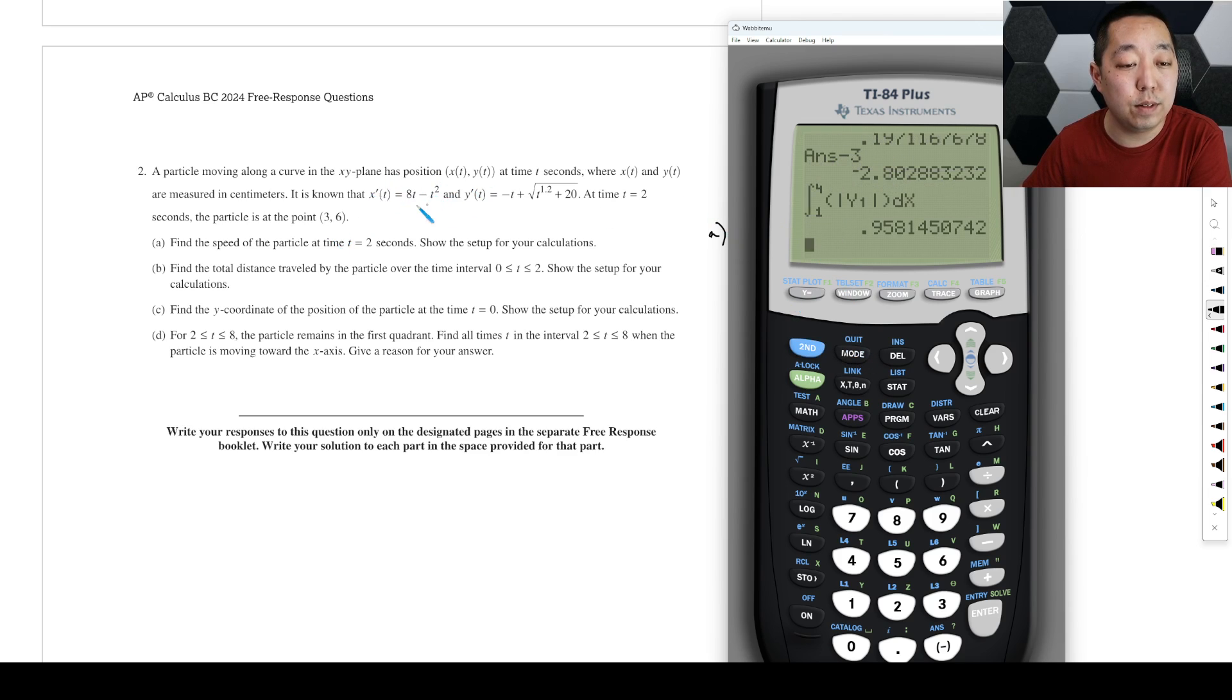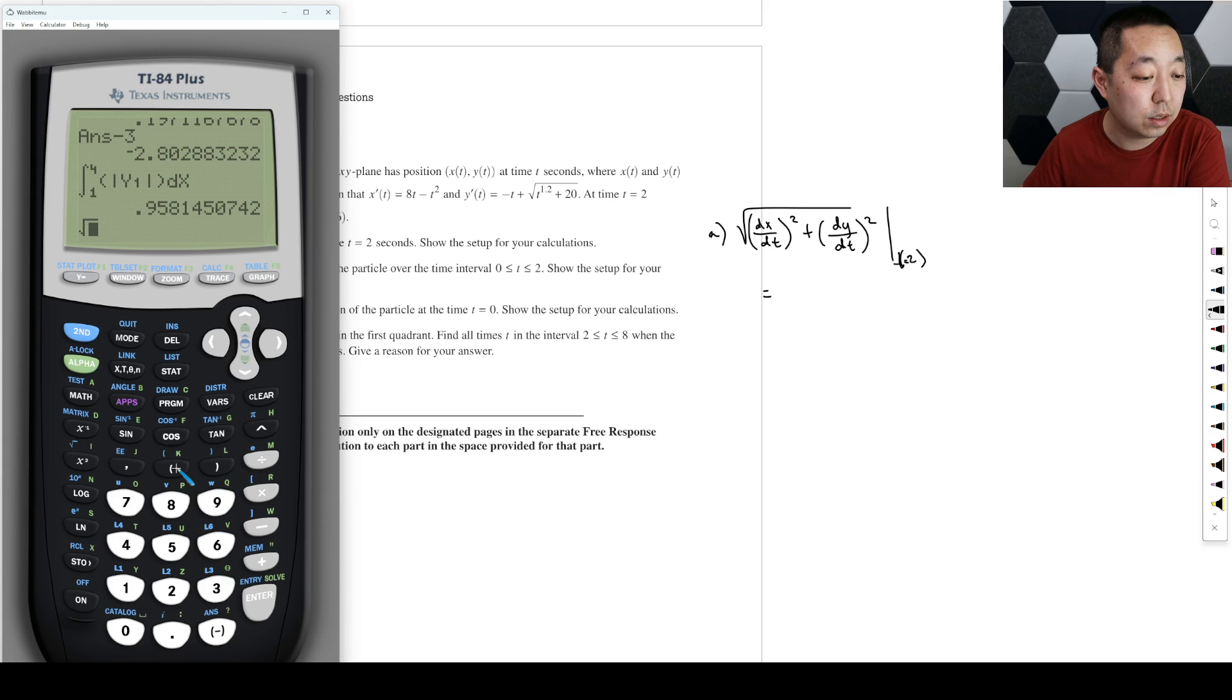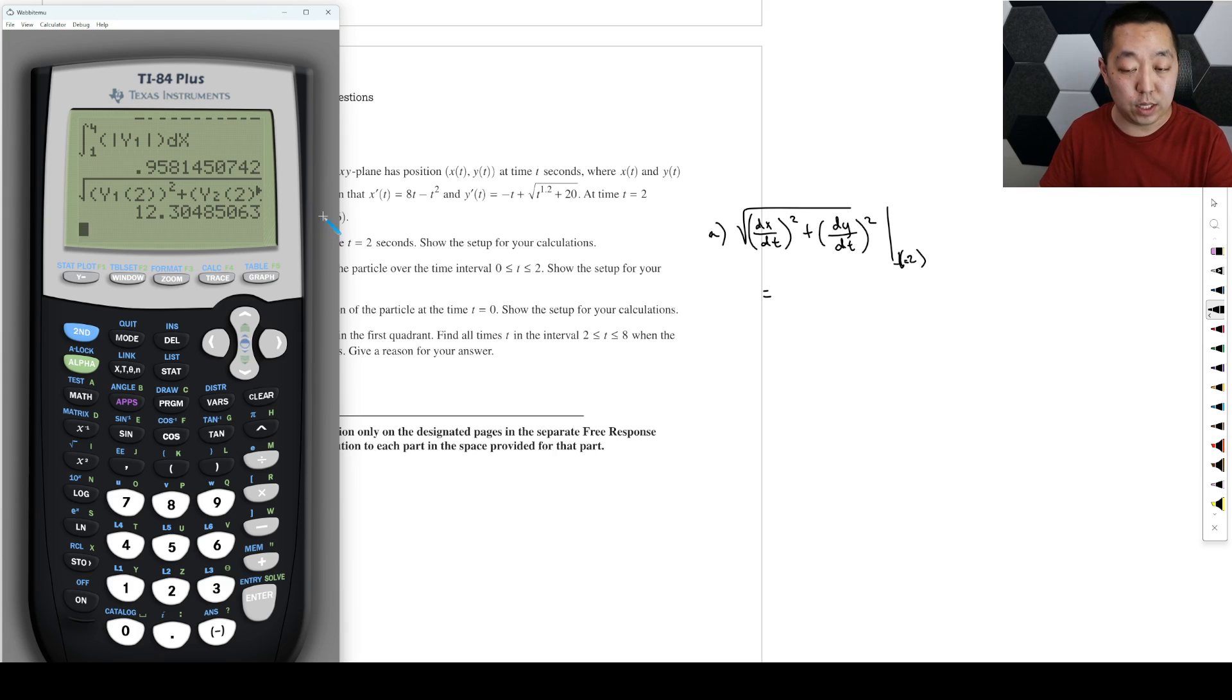Now we don't need to take the derivative of these things, we already have the derivative. So we just need to evaluate what those are. So this is going to be the square root of y1. I'm going to put parentheses, I don't know the order of operations. So we'll do y variables function y1 and we put evaluate at 2 squared. And then we'll do the same thing with y2, y variables function y2 evaluate at 2. Make sure you evaluate at 2 and then you square it because the derivative is squared. So that gives me 12.305.